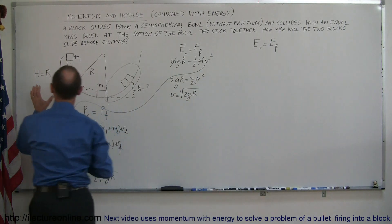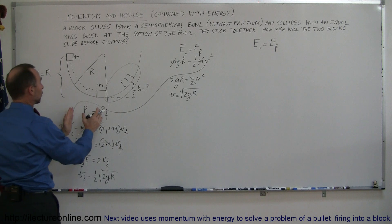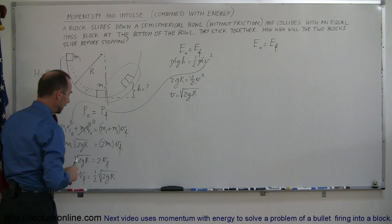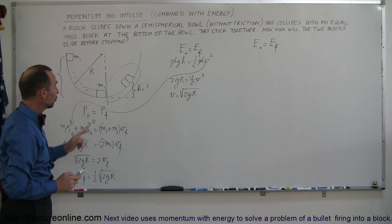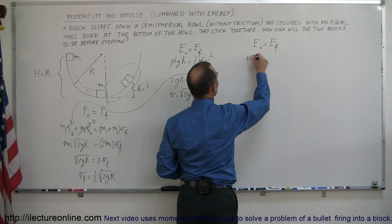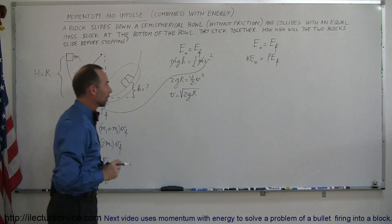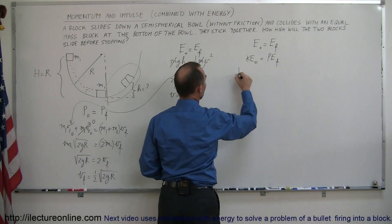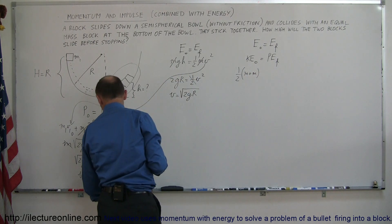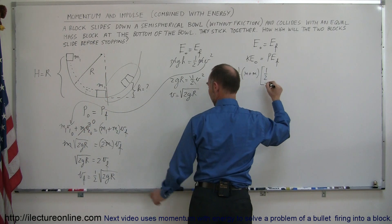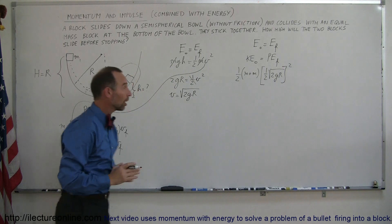First I used the conservation of energy to figure out the velocity of the block when it reaches the bottom. Then I used conservation of momentum to find the velocity after the collision. Now I use conservation of energy again after the collision. Energy initial is the kinetic energy of the two blocks — that's one-half times (m plus m) times v final squared, where v final is one-half times the square root of 2gr squared. That's the kinetic energy of the two blocks right after the collision.